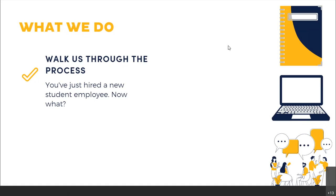Once a trainee finishes all desk training, Maryland typically schedules a meeting with them to go over final things — making sure they know what to do if they need to call out, where everything is, and so on. We also ask for feedback about the training at that point, so we know what was especially good or not good. Then Maryland adds them to the weekly desk schedule and I incorporate them into the weekend schedule.